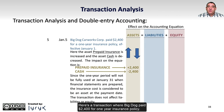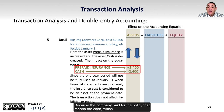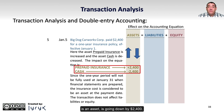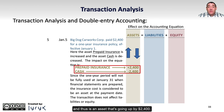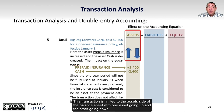In this transaction, Big Dog paid $2,400 for a one-year insurance policy. Because the company paid for the policy, cash, which is an asset, is going down by $2,400. Prepaid insurance is an asset because it represents a prepayment of the policy for the next year, and thus is an asset going up by $2,400. This transaction is limited to the asset side of the balance sheet, with one asset going up and the other going down.